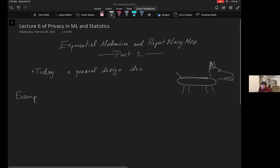Today we're going to cover a general design idea for differentially private algorithms based on a framework called selection problems. I'll explain what that means via some examples and then we'll talk about the general design idea.